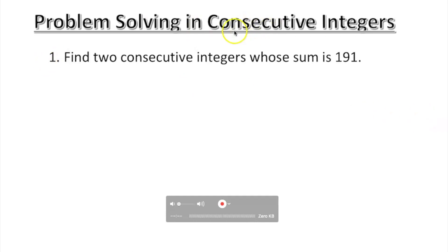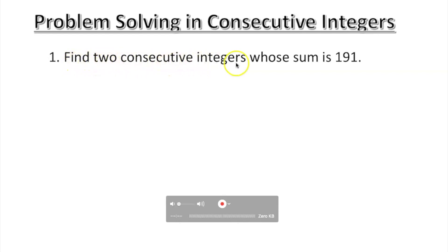Last video we learned what consecutive integers, odd and even, are. Now let's apply those concepts into problem solving. We're going to read this problem: find two consecutive integers whose sum is 191.